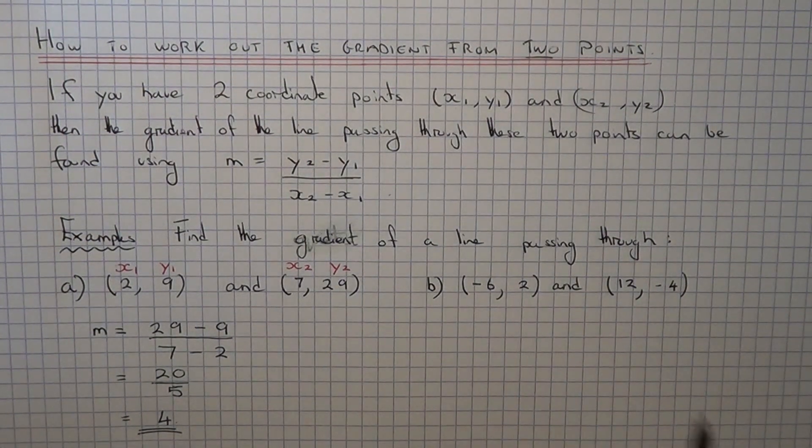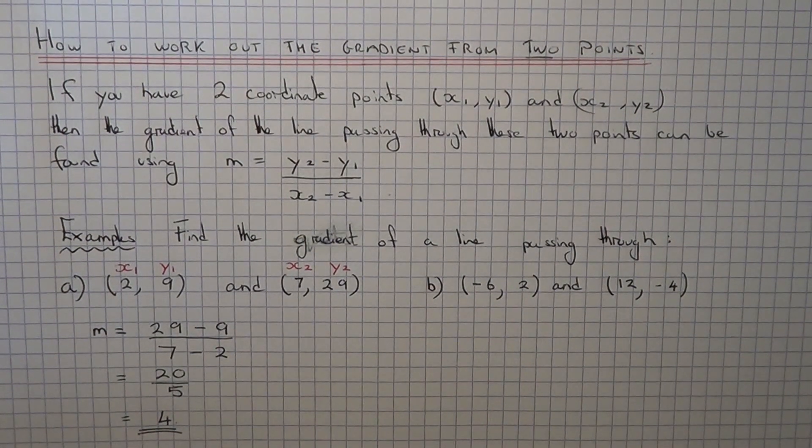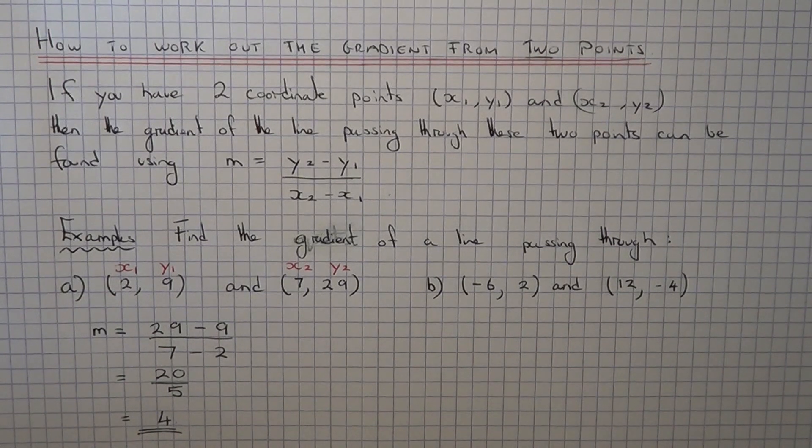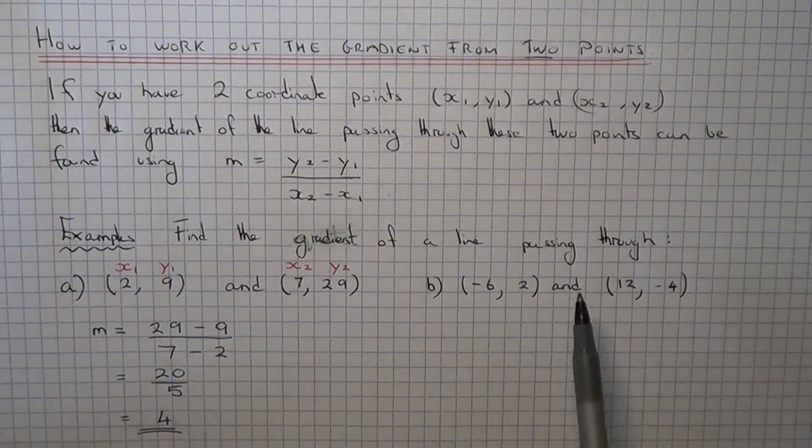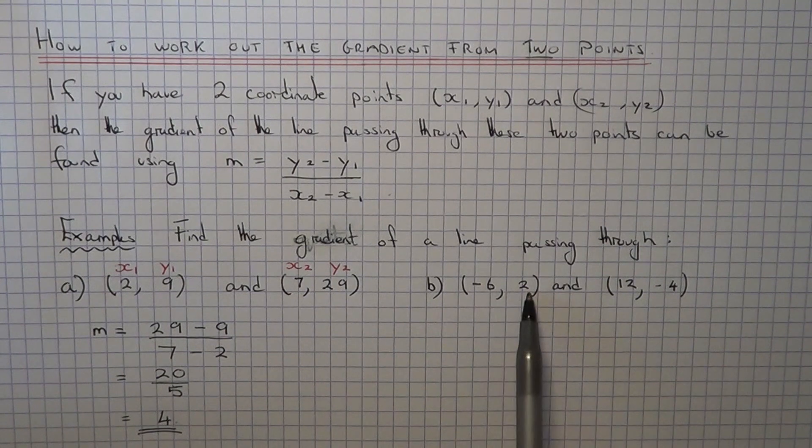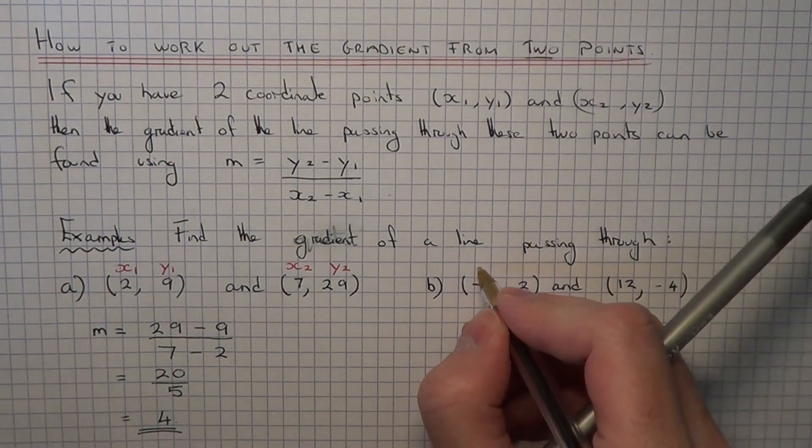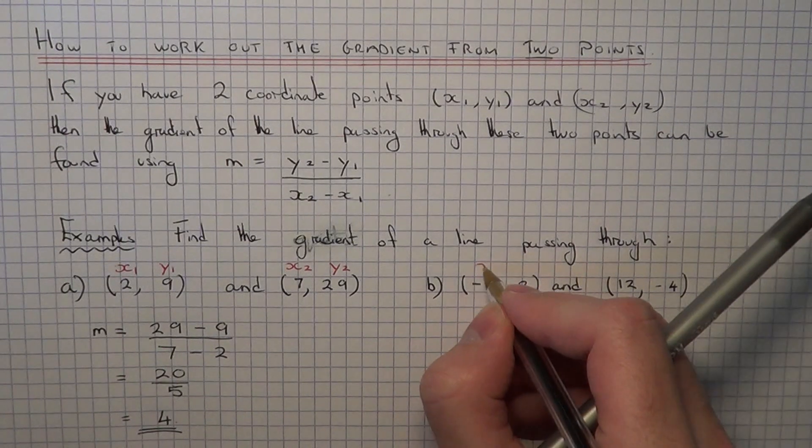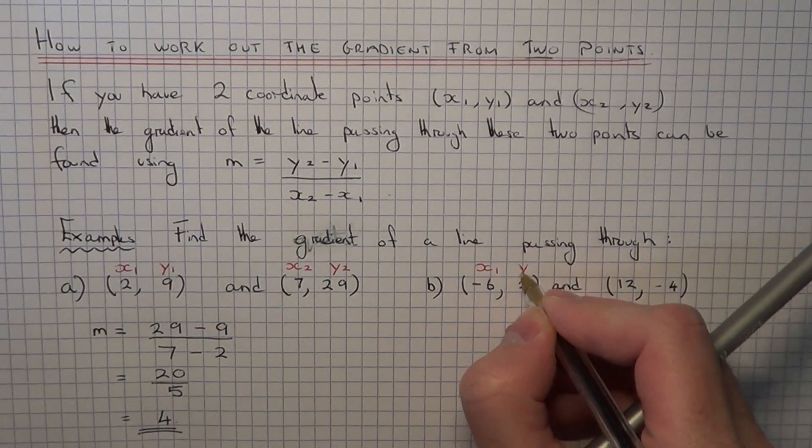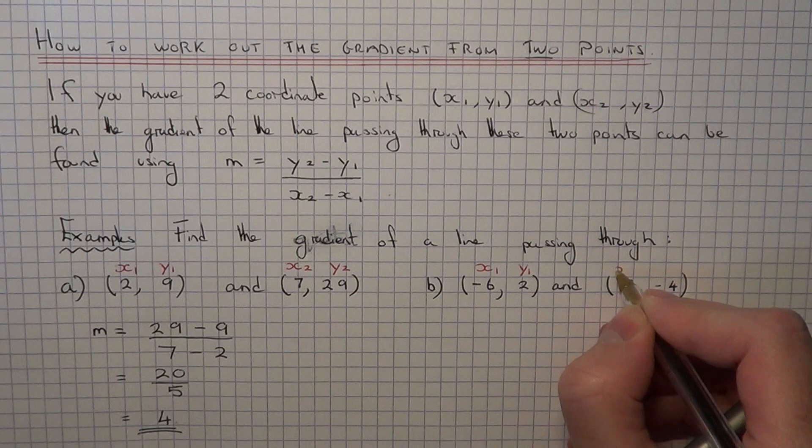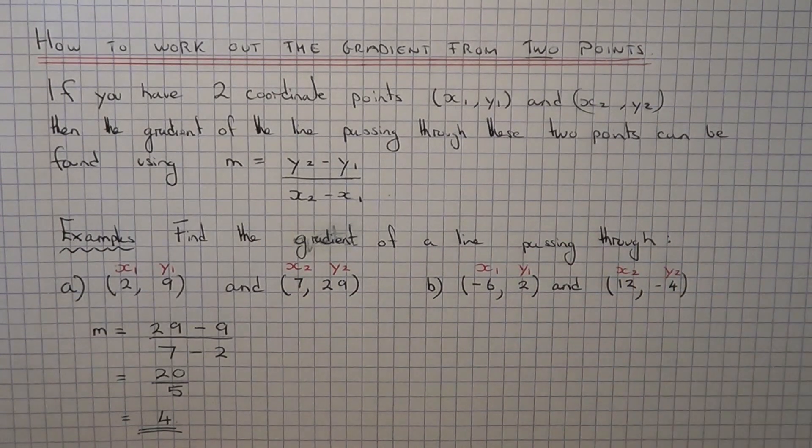So let's have a look at example b, this one's a little bit harder because you have to be careful with the negative numbers. So again we've got to find the gradient of the line passing through (-6, 2) and (12, -4). So let's begin with, label your coordinates, this is x1 and y1, and this one is x2, y2.